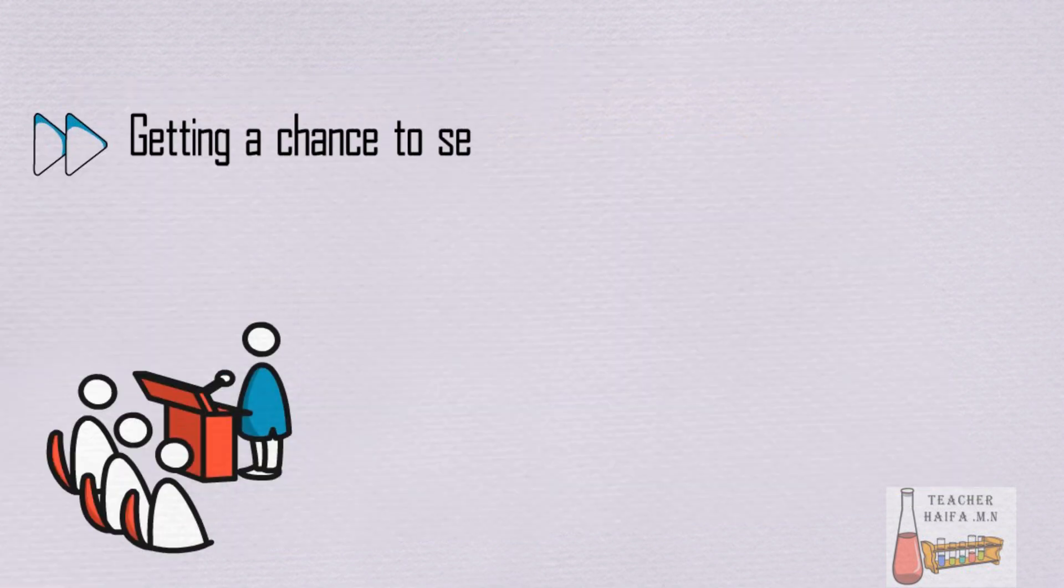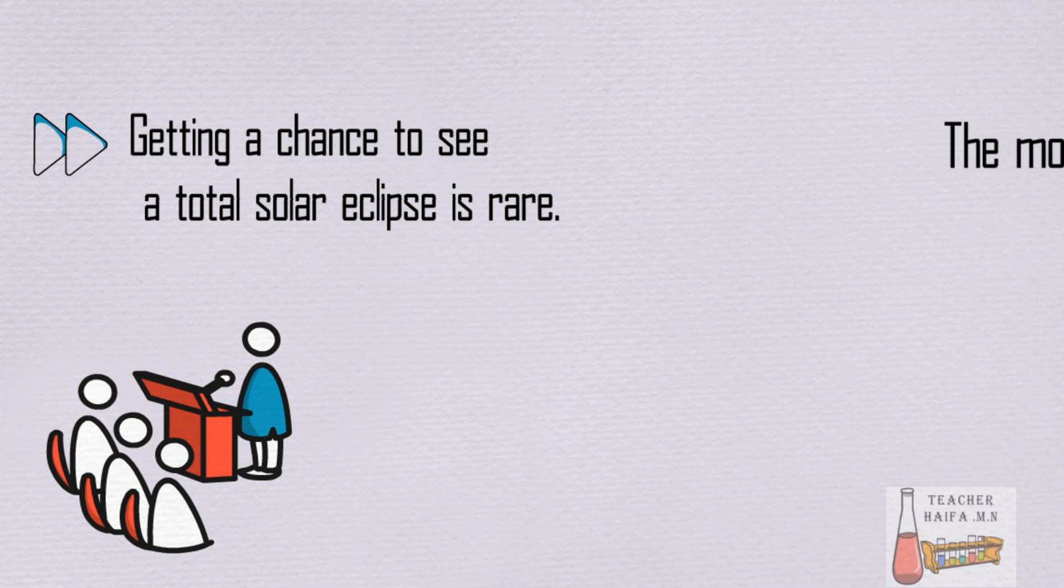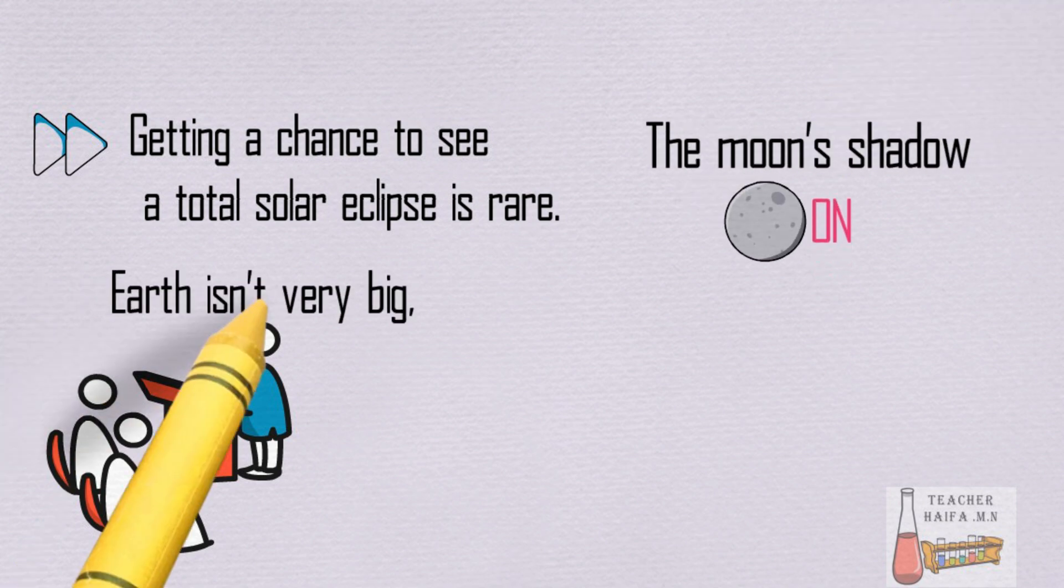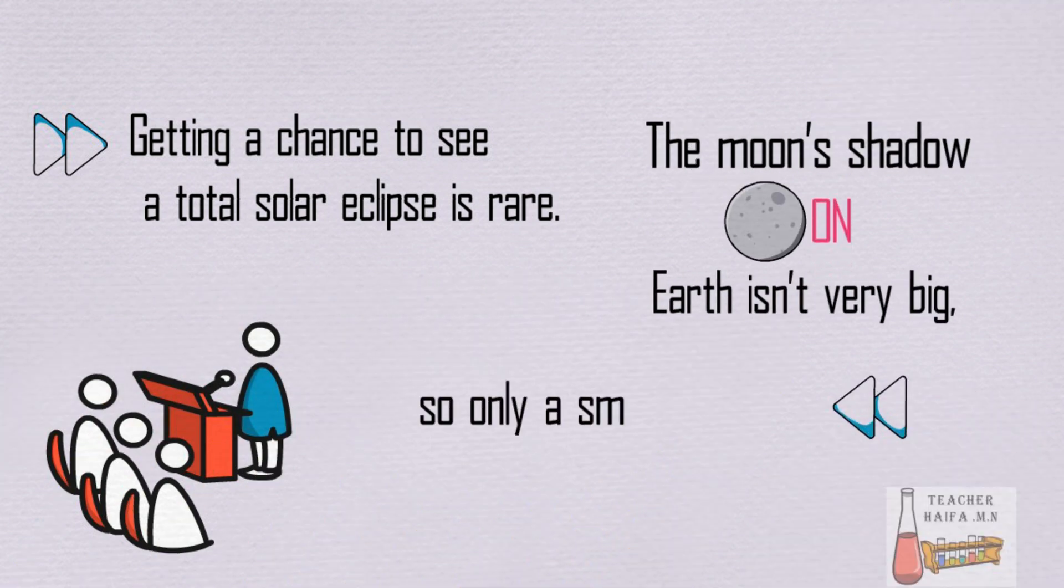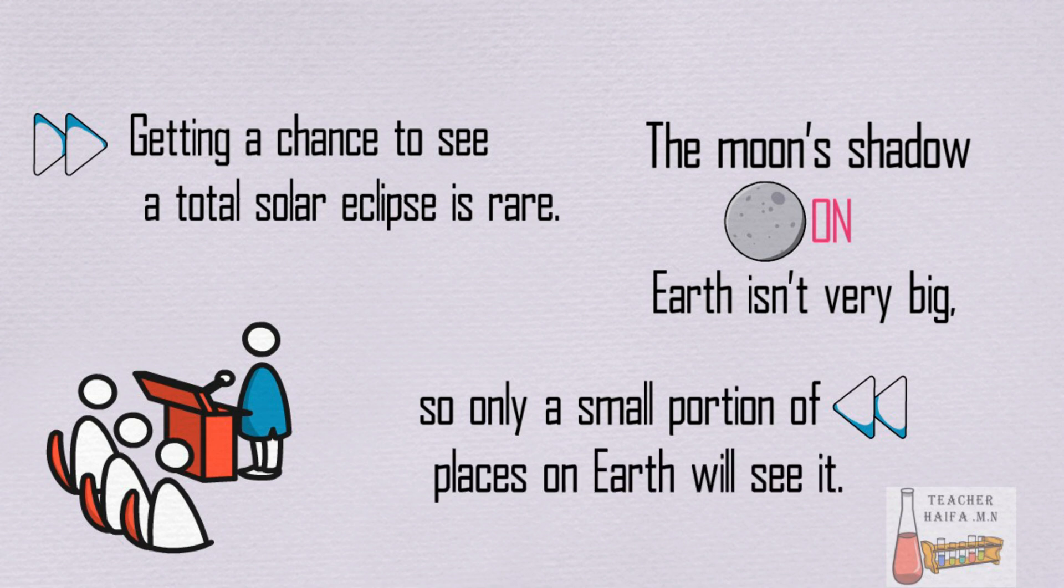Getting a chance to see a total solar eclipse is rare. The moon's shadow on Earth isn't very big, so only a small portion of places on Earth will see it.